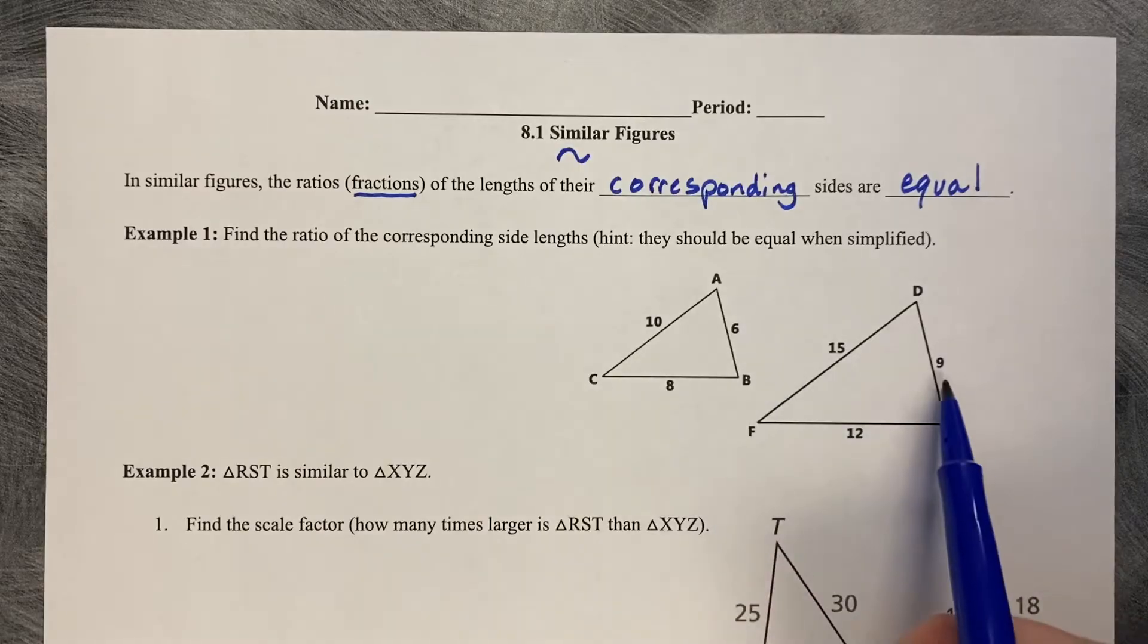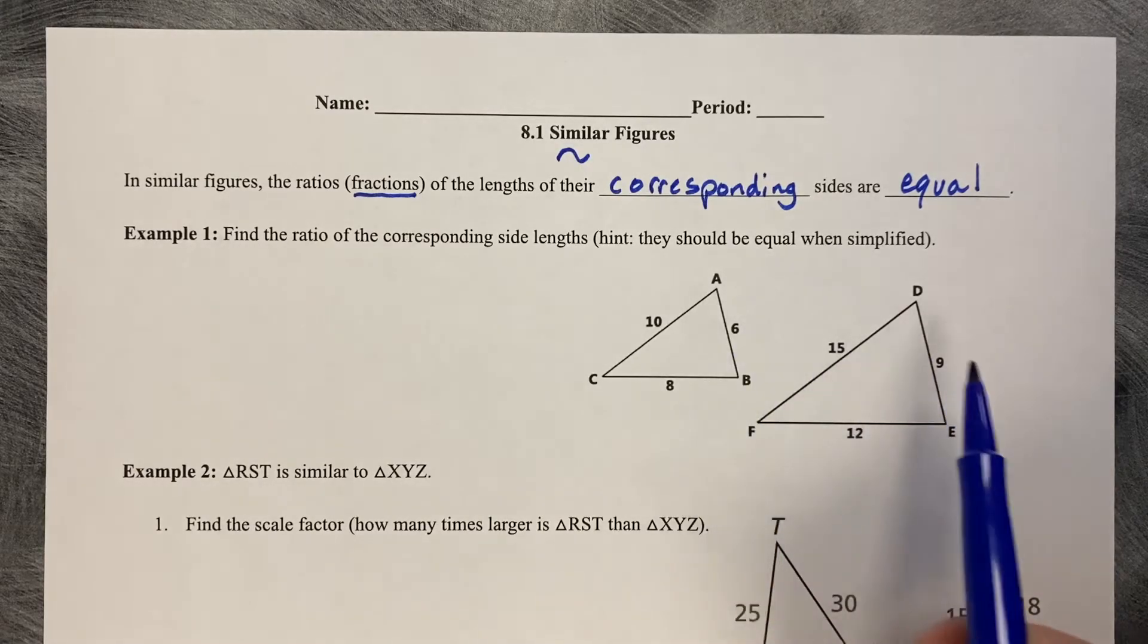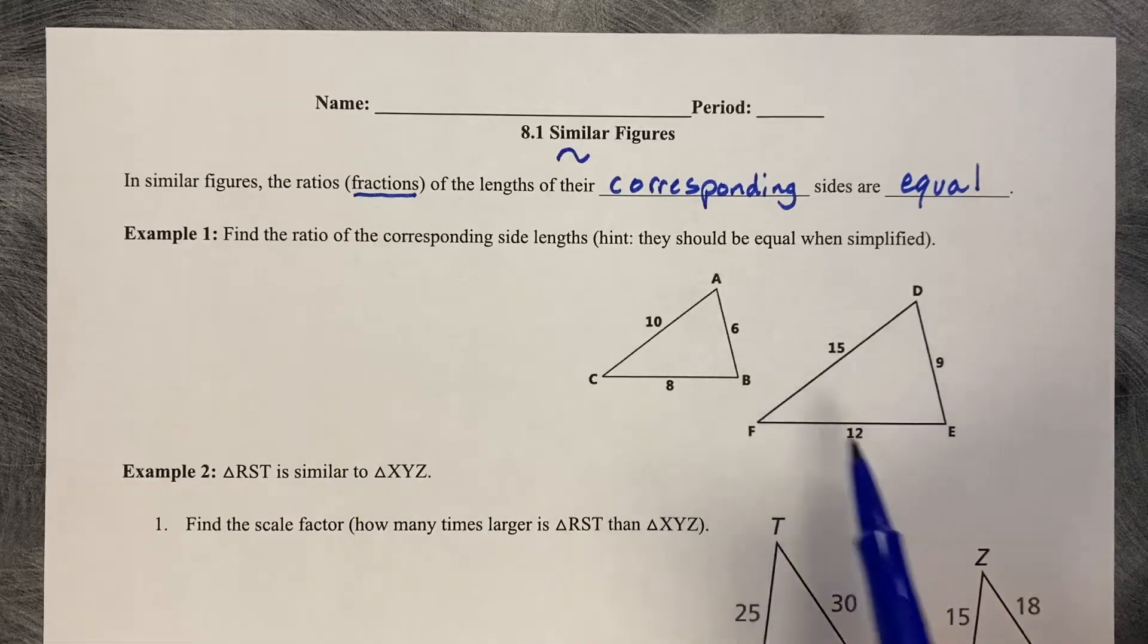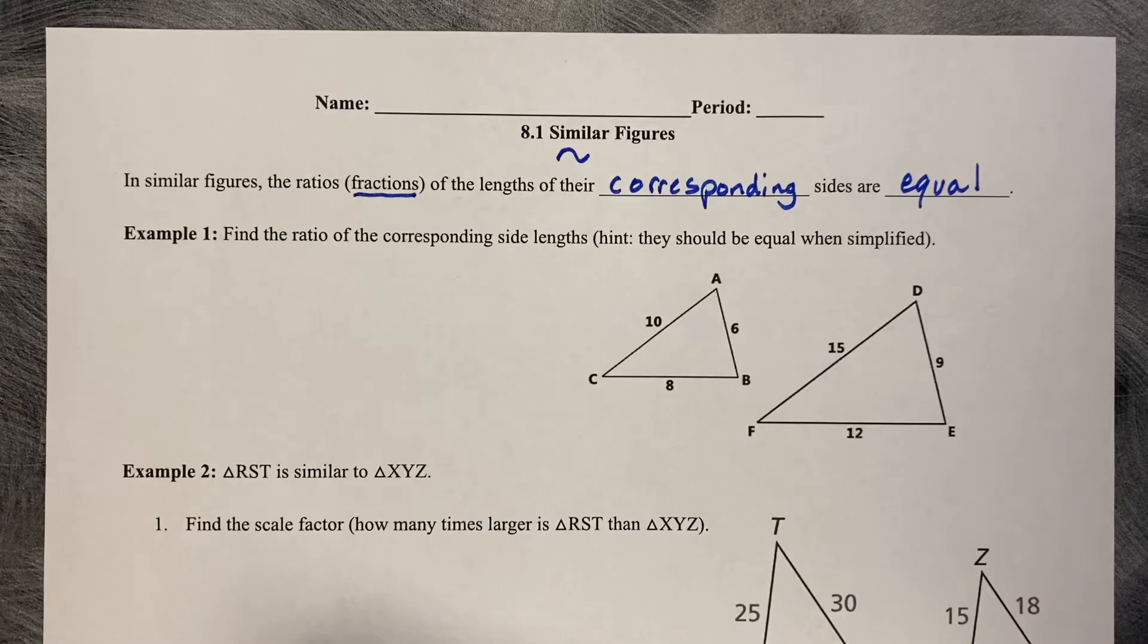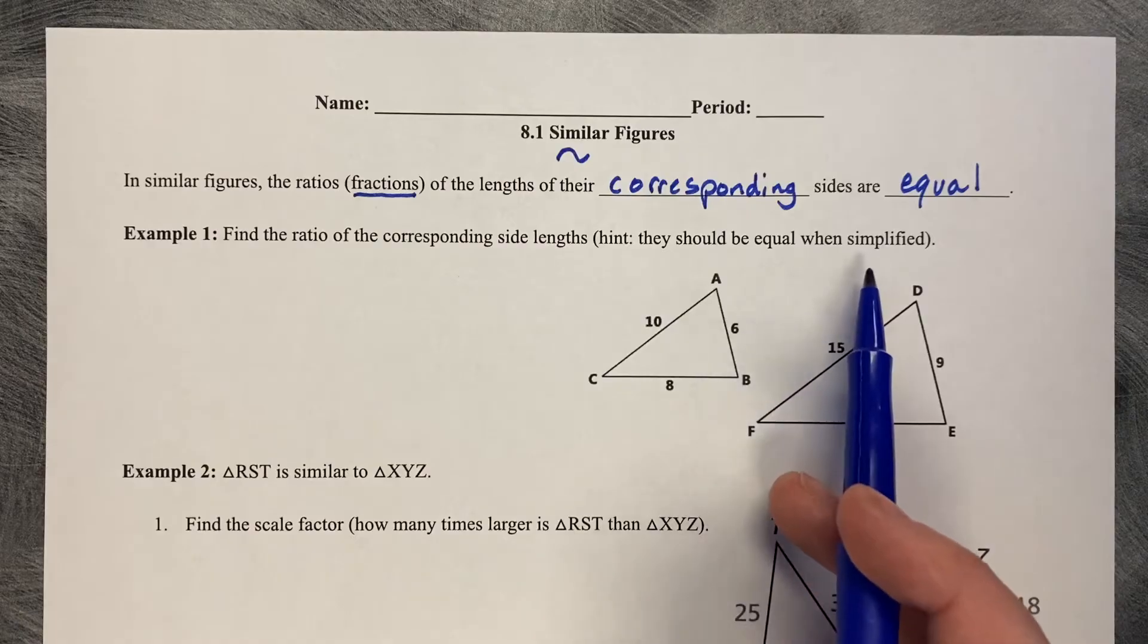So is 6 equal to 9? No. But is the fraction from 6 to 9 equal to 8 to 12? That's the question. Here's the first example. Find the ratio, or the fraction, of the corresponding side lengths. Hint, they should all be equal when simplified.